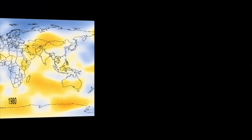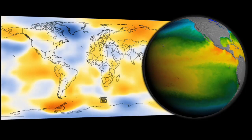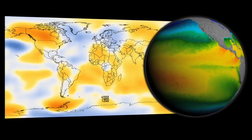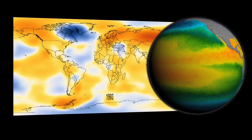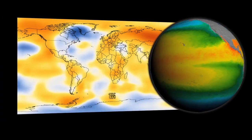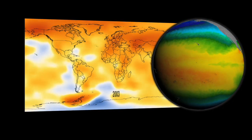Climate change on Earth is complicated by the fact that the ocean moves much more slowly than the atmosphere. So you have warming in the atmosphere and warming in the ocean, but they're occurring at different speeds — they're out of sync. And that makes predicting what's going to happen in the next hundred years very, very difficult.